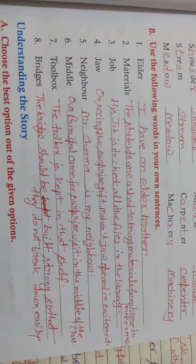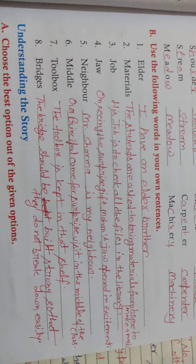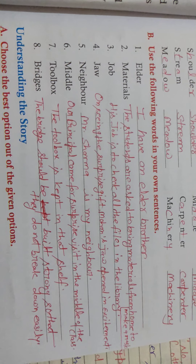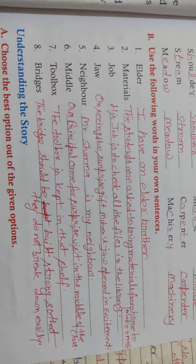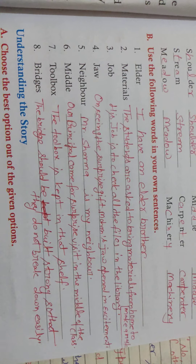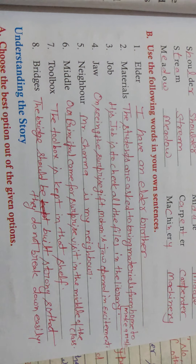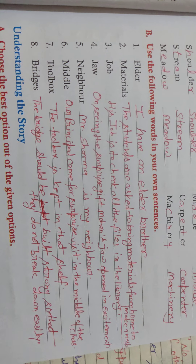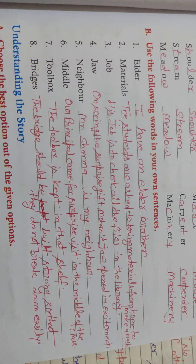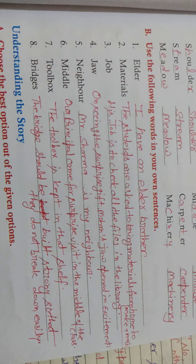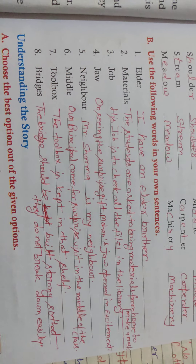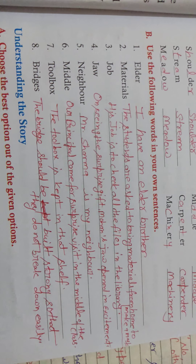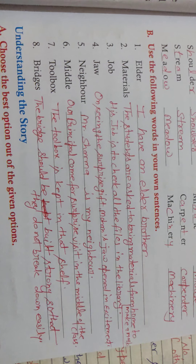Second topic: use the following words in your sentences. First — Elder. Sentence: I have an elder brother. Second — Material. Sentence: The students are asked to bring materials from home to make a mask. Third — Job. Sentence: His job is to check all the files in the library.